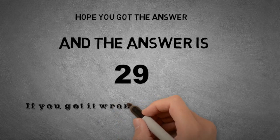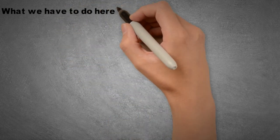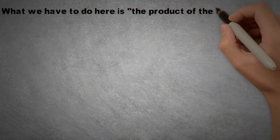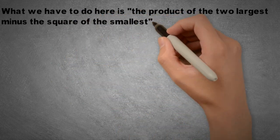If you got it wrong, let me help you with the solution. What we have to do here is the product of the two largest minus the square of the smallest.